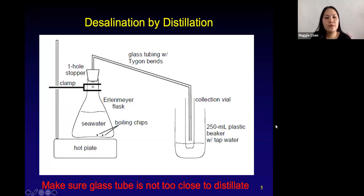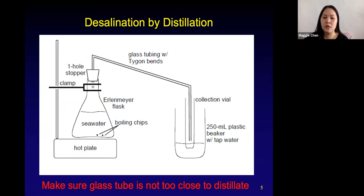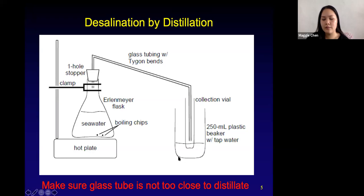If we're going to do desalination — taking pure water from seawater — we can do this through distillation. In lab, we first have our hot plate, with an Erlenmeyer flask holding seawater and a couple of boiling chips. Those are little pebbles you put in to help your solution boil. The flask is held in place with a clamp and a stopper, which connects your glass tubing or rubber tubing to your collection vial, which is held inside a beaker with tap water or an ice bath.